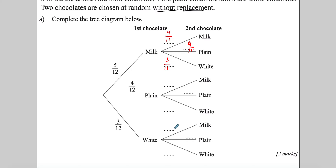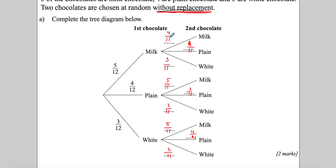Pause the video and try the next branch yourself. On the plain-first branch you should get 5/11, then 3/11. On the white branch: milk stays at 5/11, plain stays at 4/11, and since we picked one white, it becomes 2/11. You can verify by checking that the numerators sum to the denominator: for example 5+4+2 = 11.